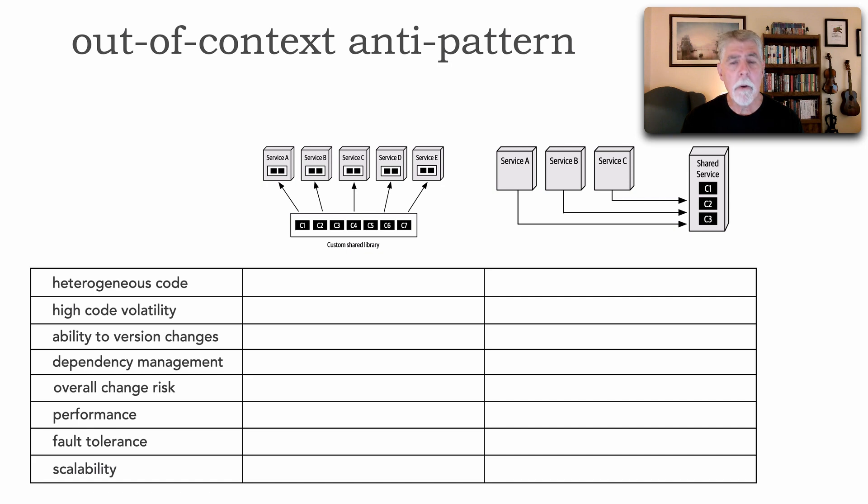For example, heterogeneous code doesn't work well with a custom shared library because for each type of language or platform we have, we have to rewrite the code in that language. Whereas a shared service could be in any programming language because it's just a remote call to get to that shared functionality. And so for heterogeneous code the shared service is by far the better choice.